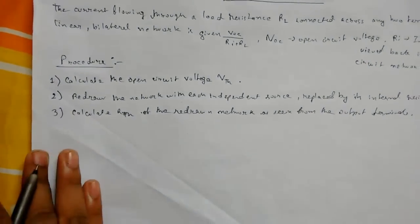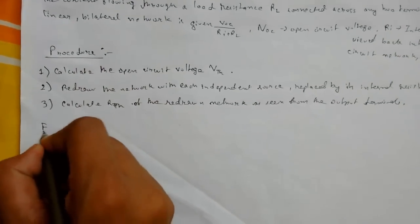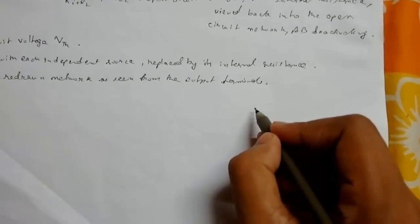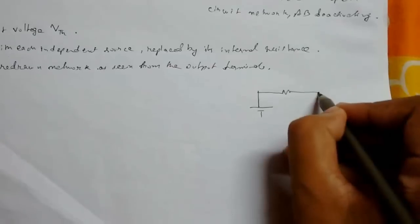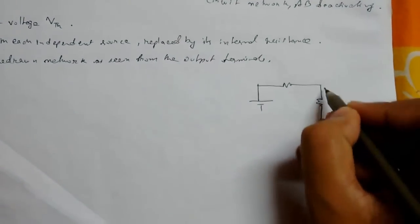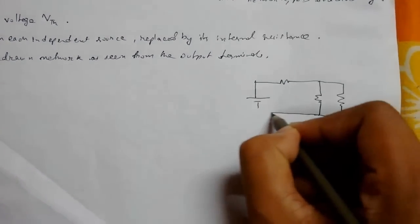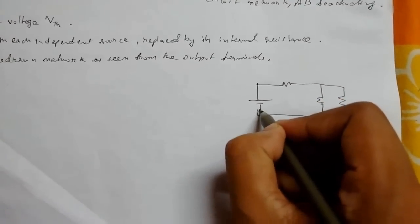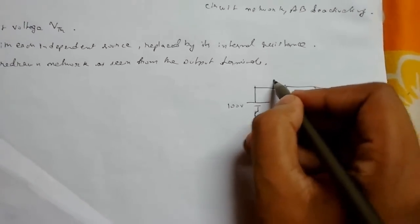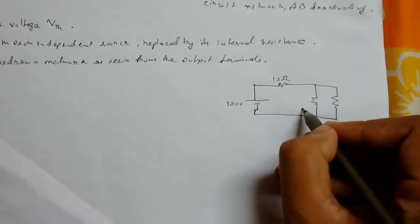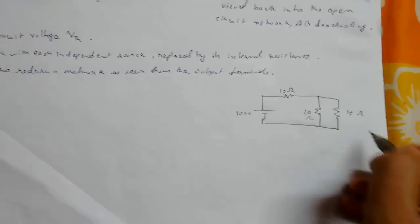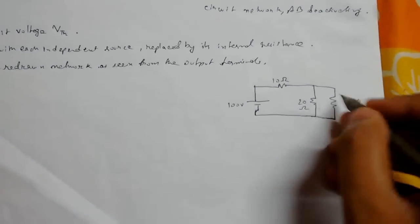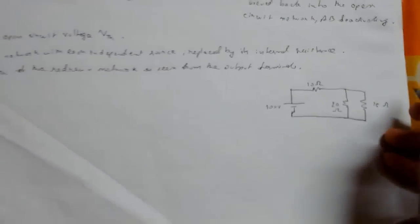Let us see an example for better understanding. Suppose we have the circuit something like this: This is our battery source, voltage was 100 volts, this would be 10 ohms, suppose 20 ohms, and this 5 ohms.